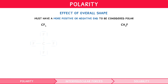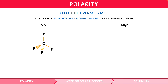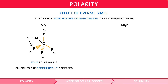The Lewis structure for CF4 shows 4 electron domains and tetrahedral domain geometry. Since all 4 domains are bonding, the molecule is tetrahedral. As fluorine's electronegativity of 4 is greater than carbon's of 2.6, it has 4 polar bonds. However, the delta-negative fluorines are symmetrically dispersed around the central carbon, so the molecule does not have a more positive or negative end. Thus, CF4, whilst containing 4 polar bonds, is nonpolar.